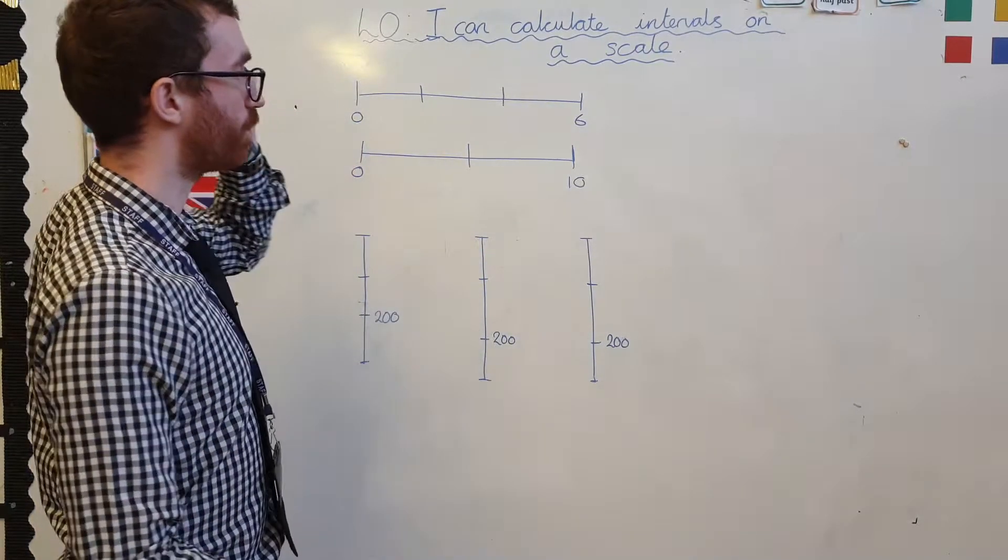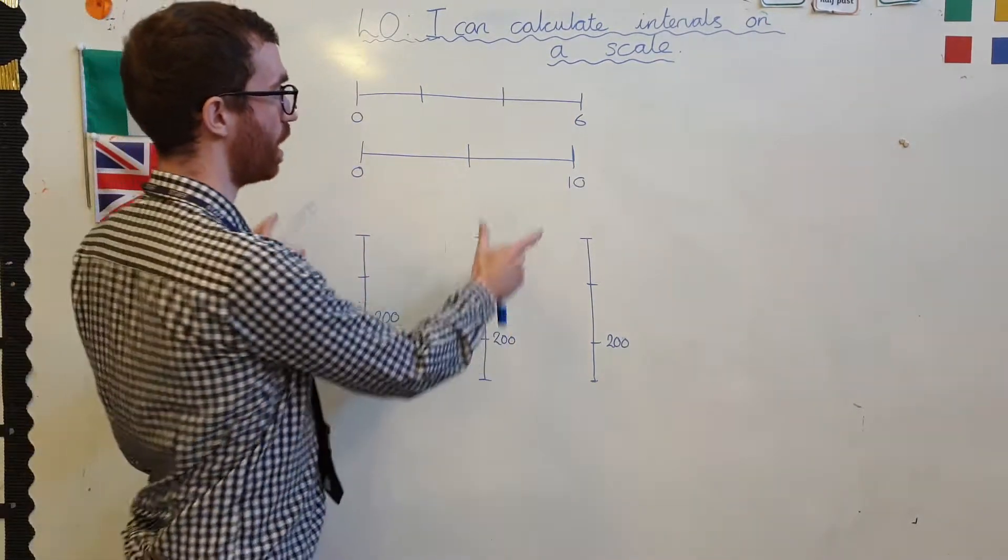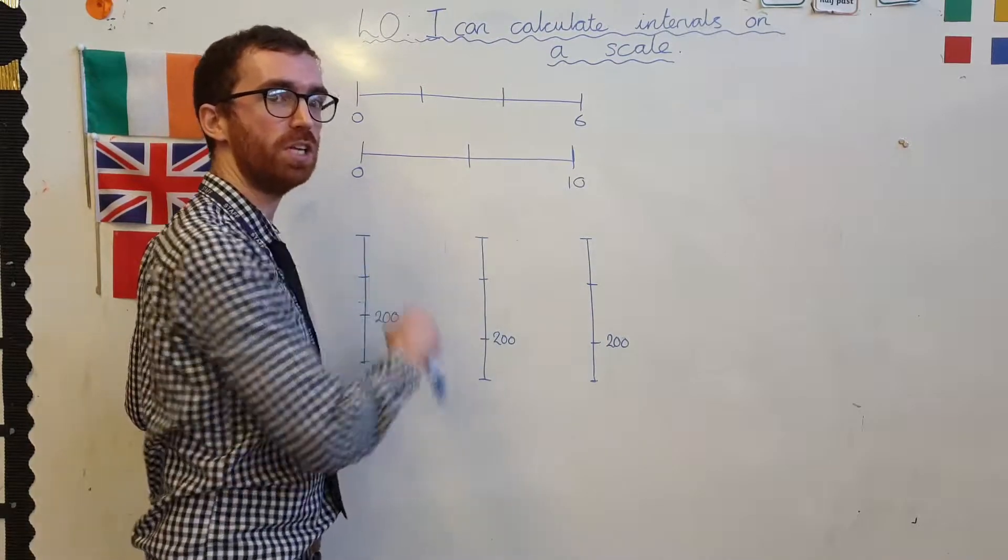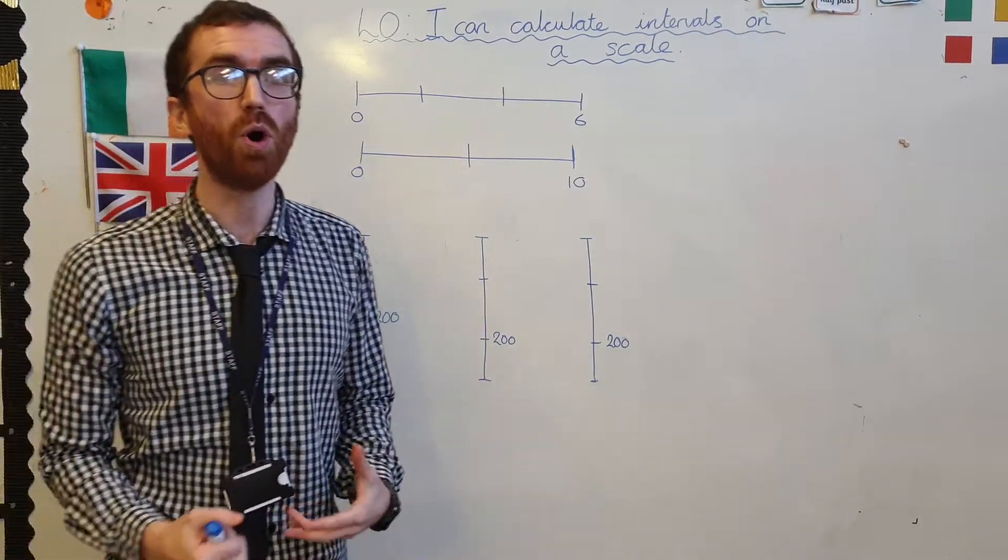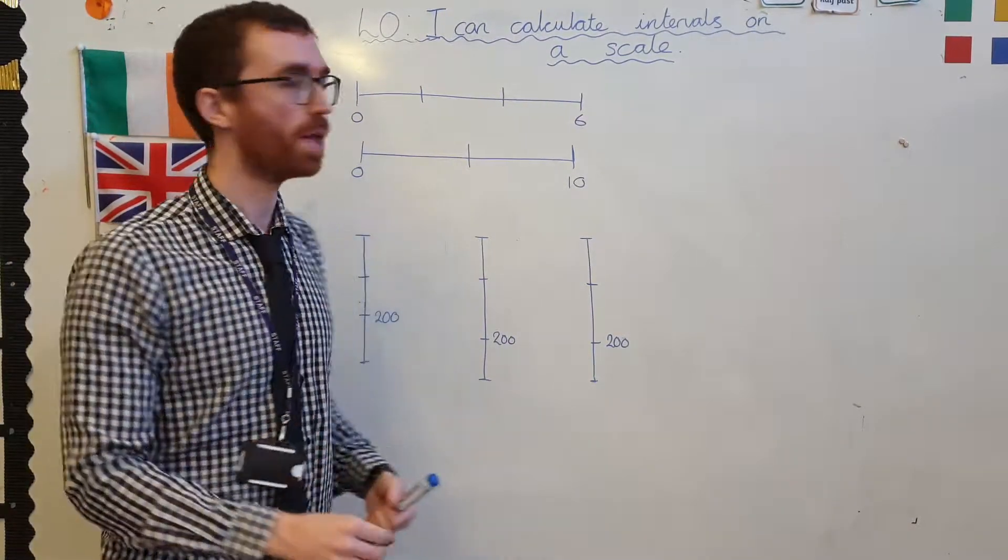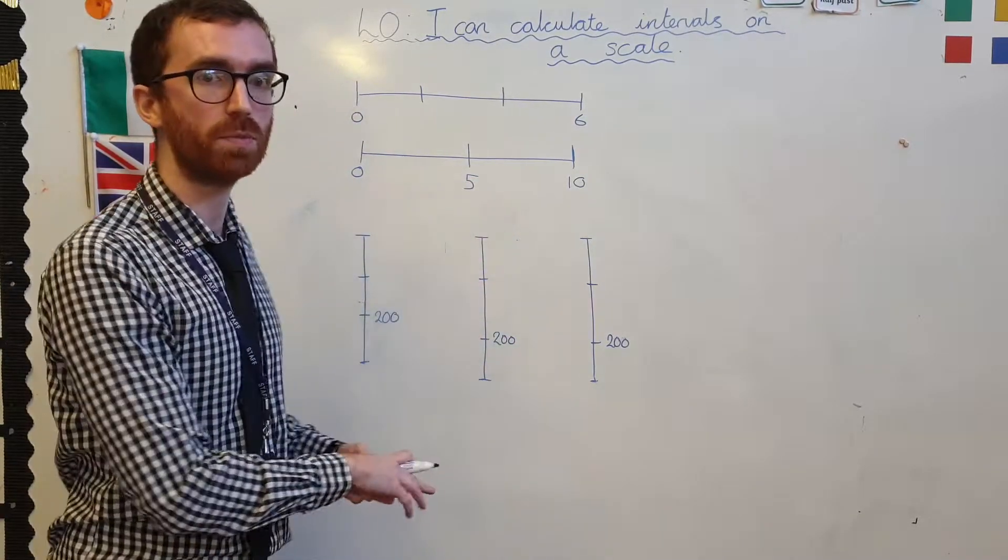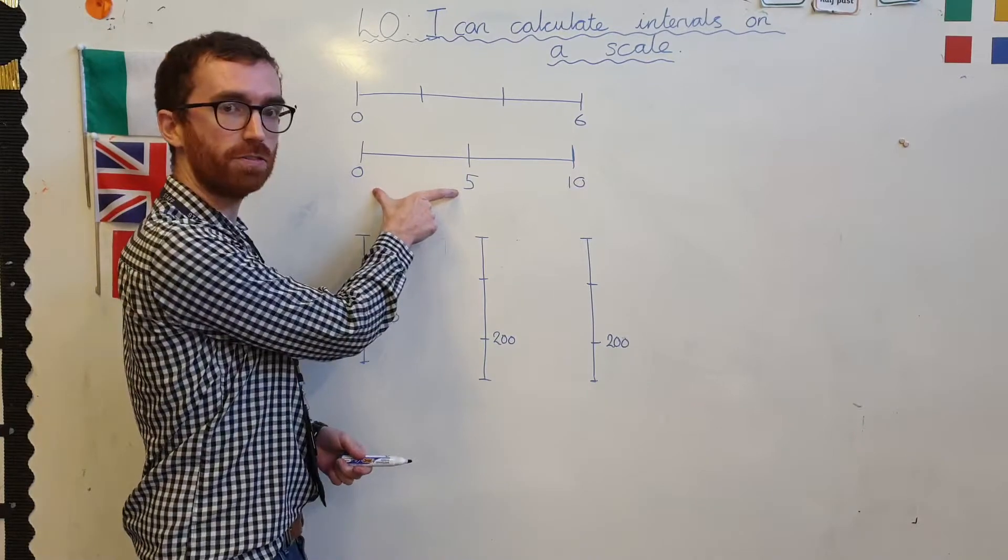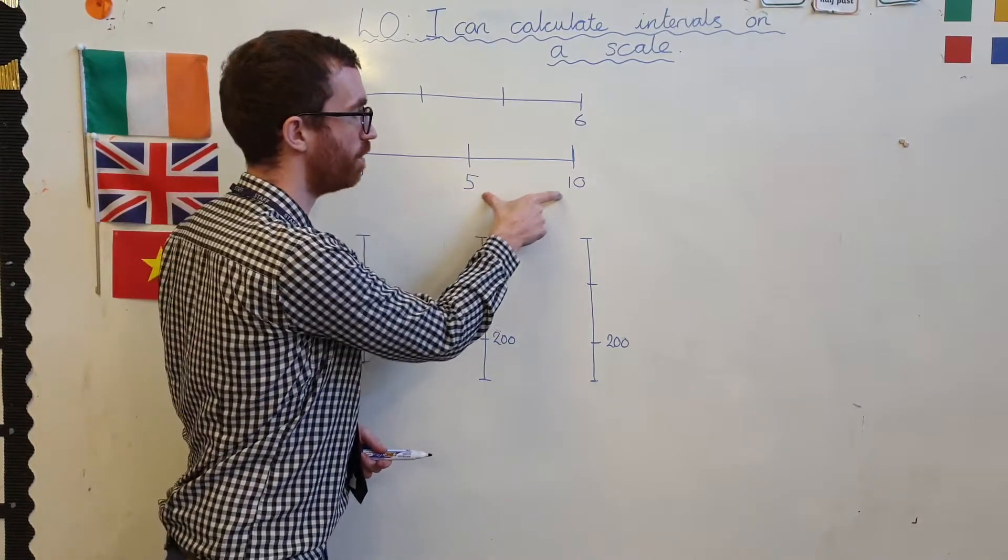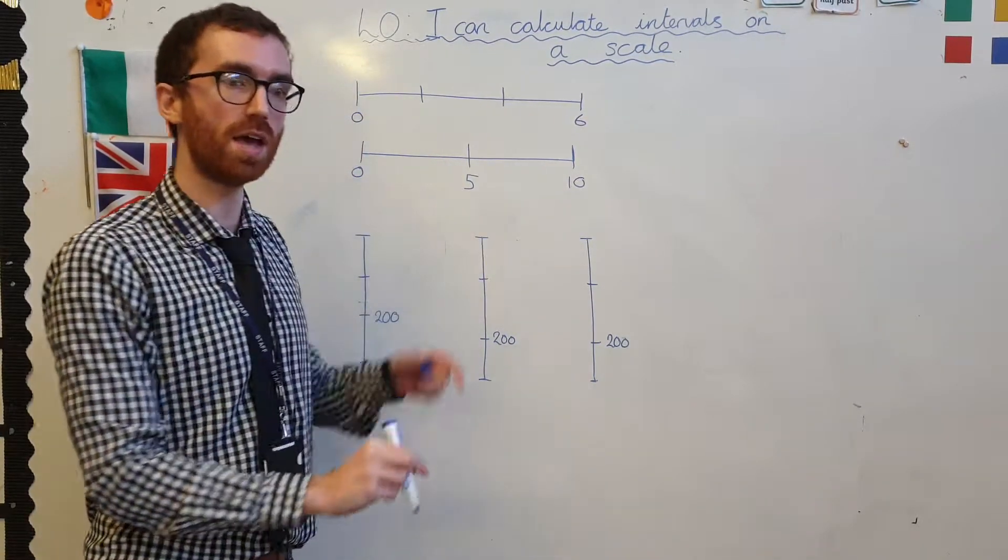So what you would have hopefully thought is, yeah, this looks like it's halfway between these two numbers, and you can think to yourself, what is half of 10? Well, half of 10 is 5. Let's see if this works. From here to here is 5, add another 5 here to here, 10. Oh yeah, that works.